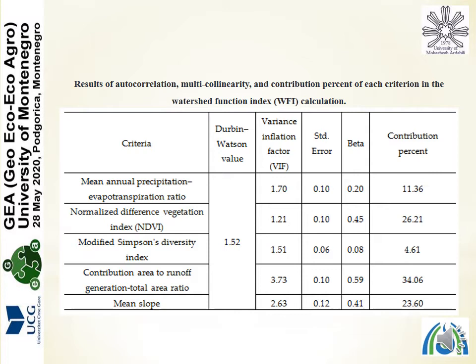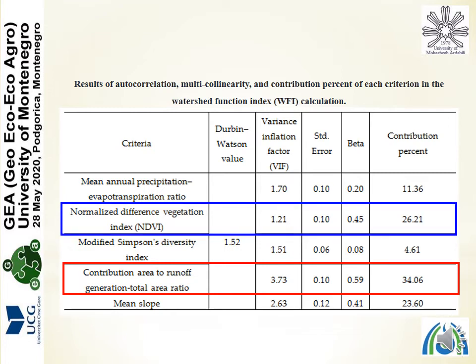We thoroughly analyzed the collinearity, and the selected criteria fall within the accepted range of the Durbin-Watson and Variance Inflation Factor (VIF) values. Only the Shannon diversity index was removed due to collinearity. The results show that the contribution area to runoff generation to total area ratio has the highest contribution percent at about 34%, and the second is NDVI with a value of 26%.